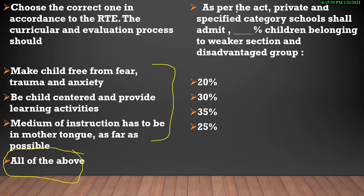Now the last question: As per the RTE Act, private and specified category schools का कितना percent provision दिया गया है weaker section या disadvantaged groups के बच्चों के लिए? Options: 20%, 30%, 35%, या 25%. Correct answer is 25% — हर एक public/private school जो बच्चों का admission देता है उसमें 25% weaker और disadvantaged groups को भी admission देना compulsory है.